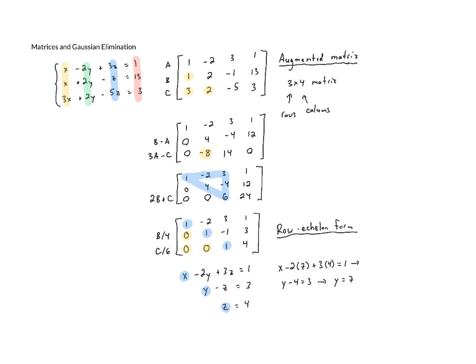When we do those multiplications out, we get x minus 14 plus 12 equals 1. When we combine like terms, we get x minus 2 equals 1. And when we add 2 to both sides, that gives us x equals 3. So we end up with our final answer, x equals 3, y equals 7, and z equals 4.